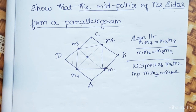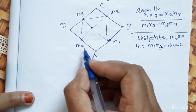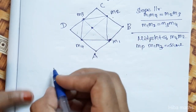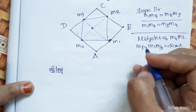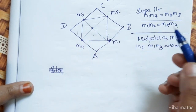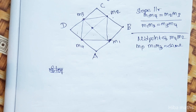First, we will start by finding the midpoints M1, M2, M3, M4. Once we have the midpoints, we can proceed to find the slopes.